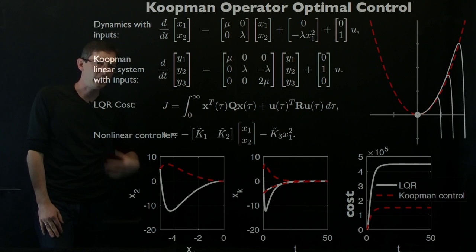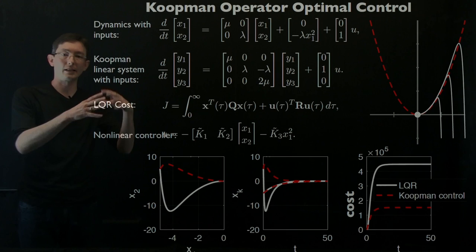That's what we want to do. Essentially, this Koopman controller understands these intrinsic dynamics, the slow manifold, and instead of fighting that, it's taking advantage of it. This is what we want to do.